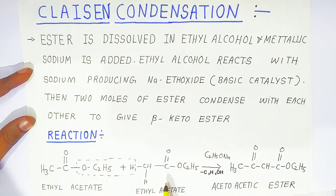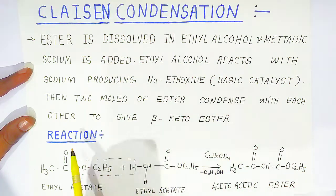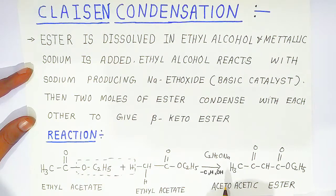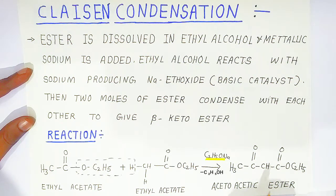The two esters are ethyl acetate — we have taken two molecules of ethyl acetate. These two ester molecules condense with each other to give a beta-keto ester. The hydrogen of this ester condenses with the ethoxide of the second ester, and in the presence of base you get acetoacetic ester.